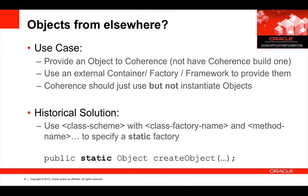I really don't want Coherence to create or instantiate the object for me — I really want that object to perhaps already be configured and injected into Coherence. Historically what we would do is configure a static factory: use a layer of indirection, create a new class, define a static method, and say in the class scheme that there's a class factory and specify the method that will provide the objects.